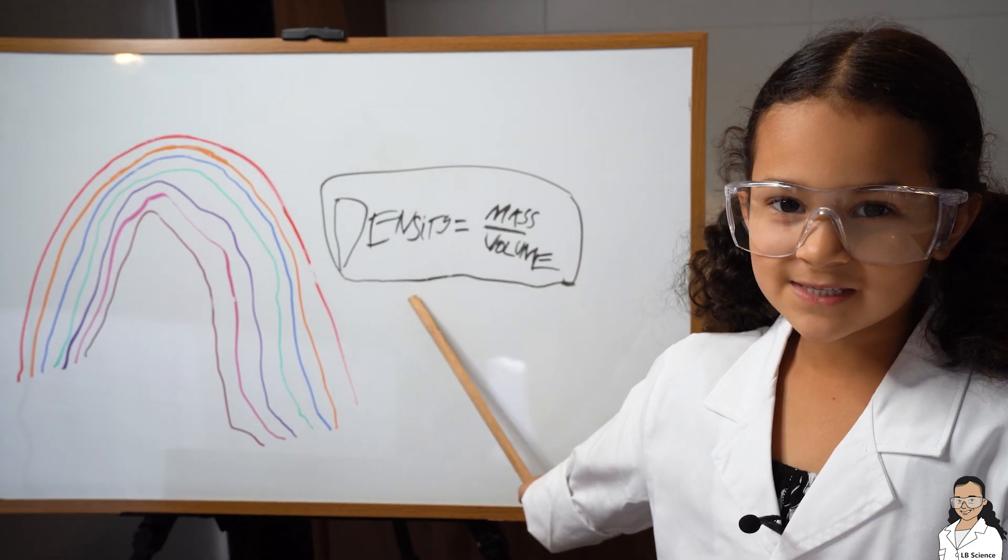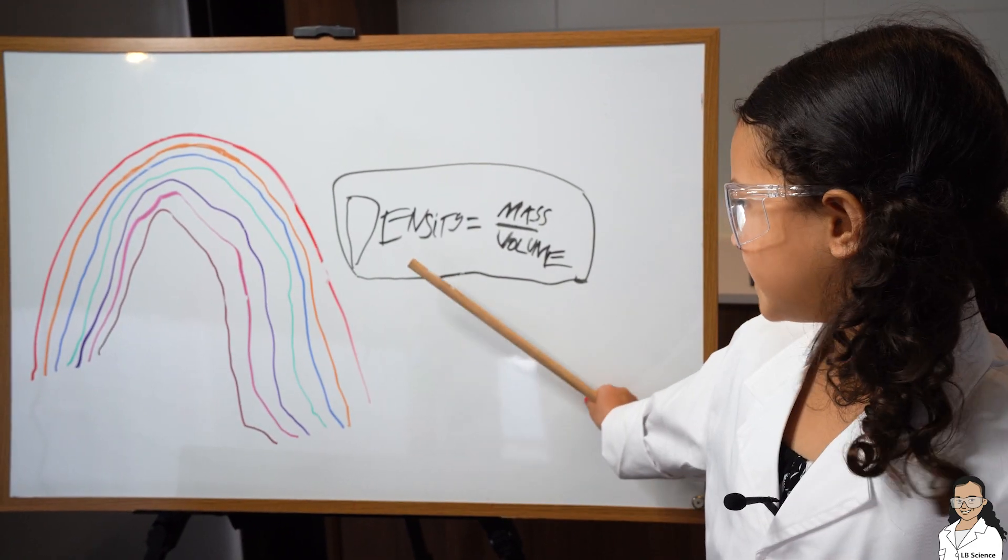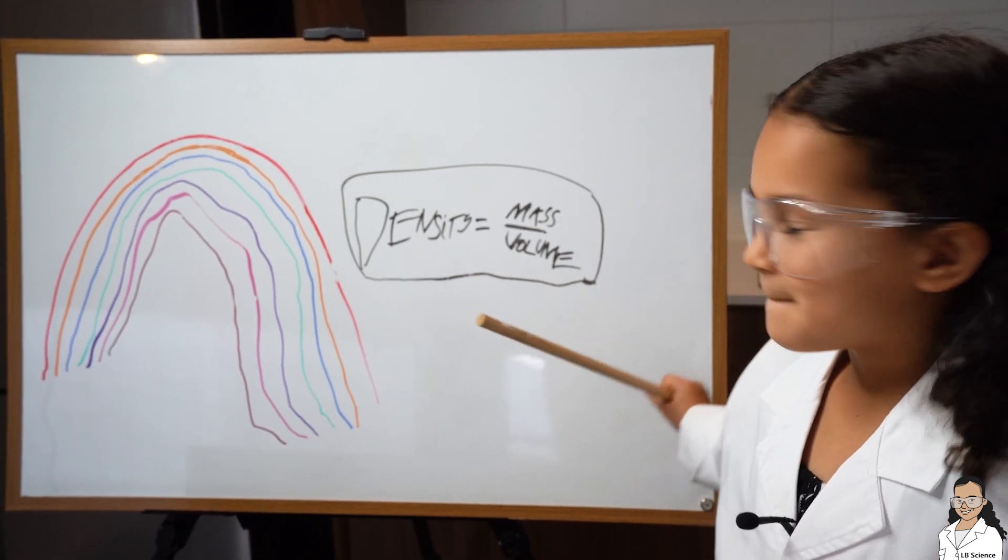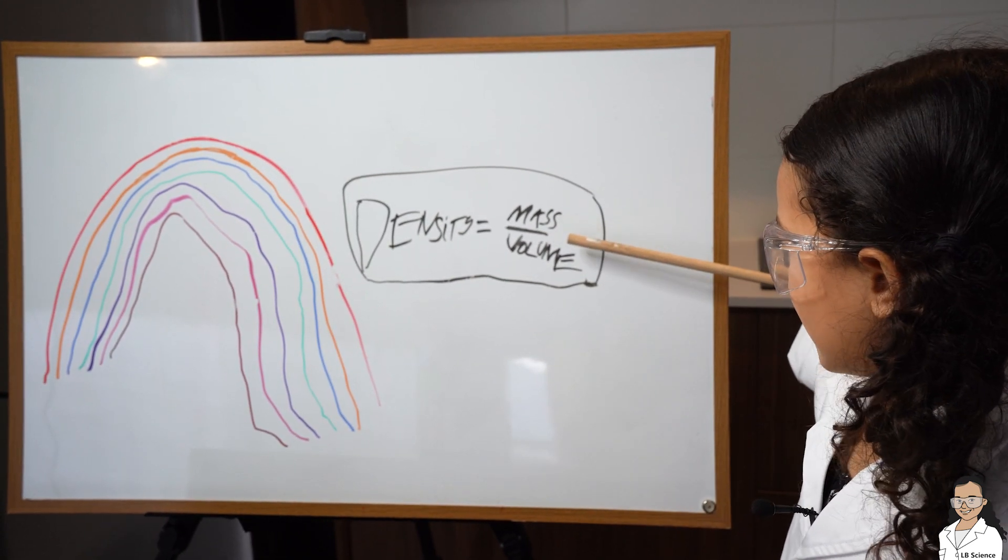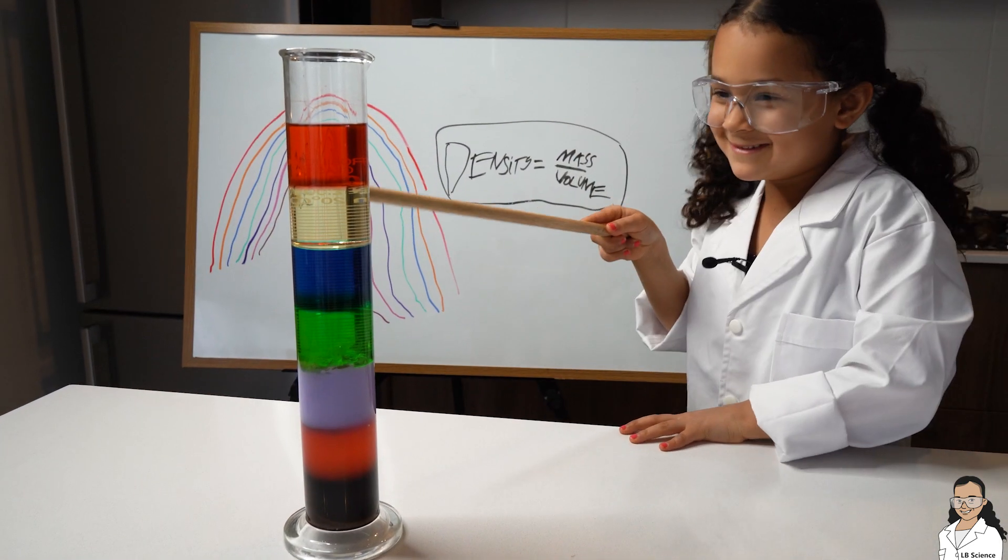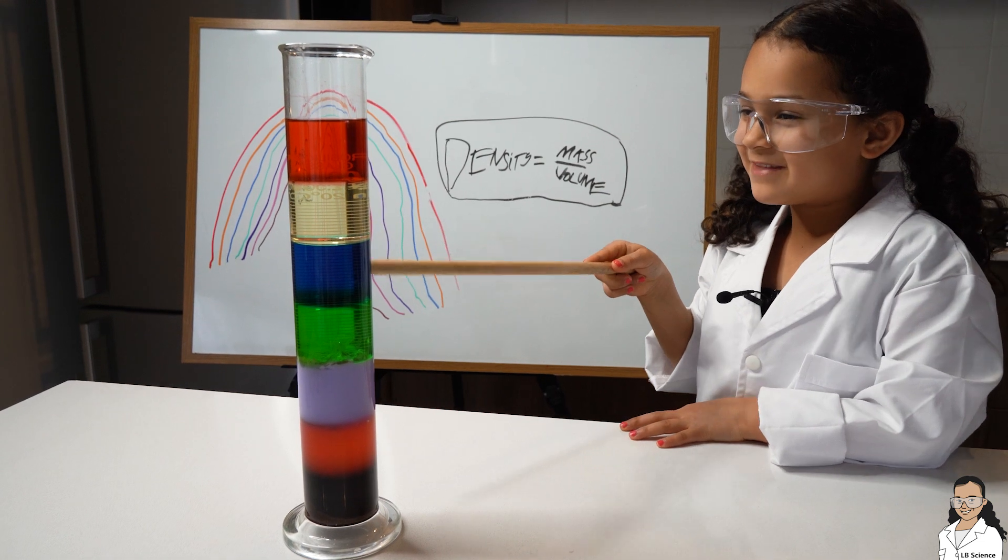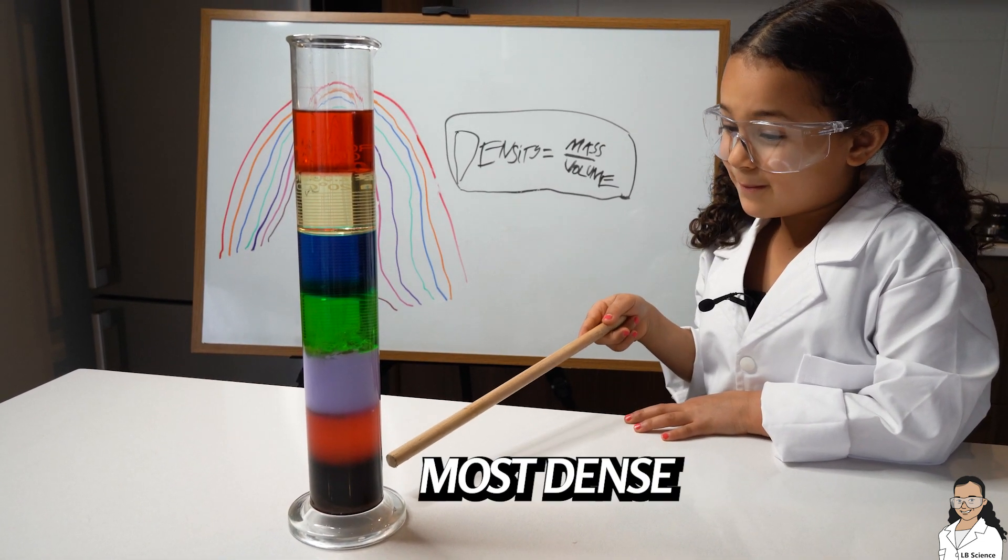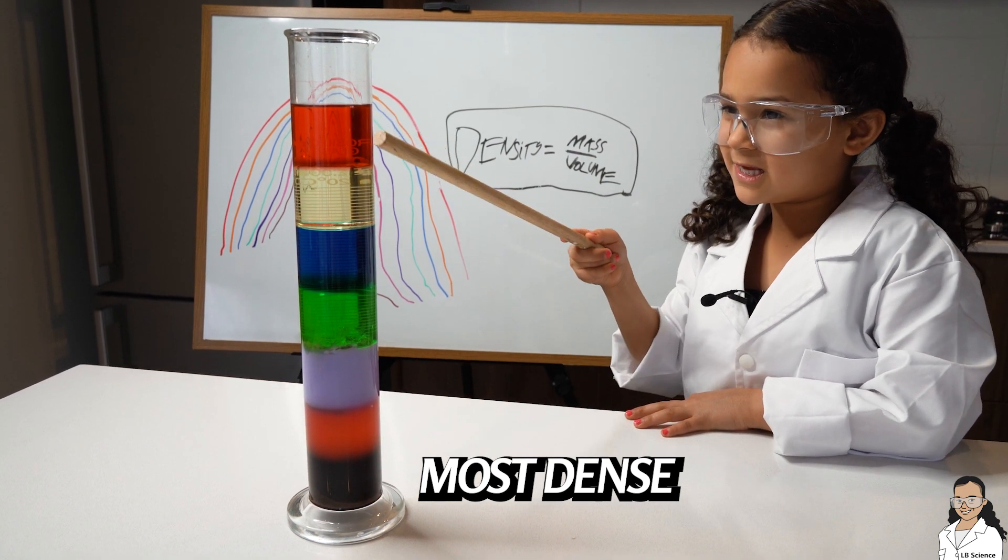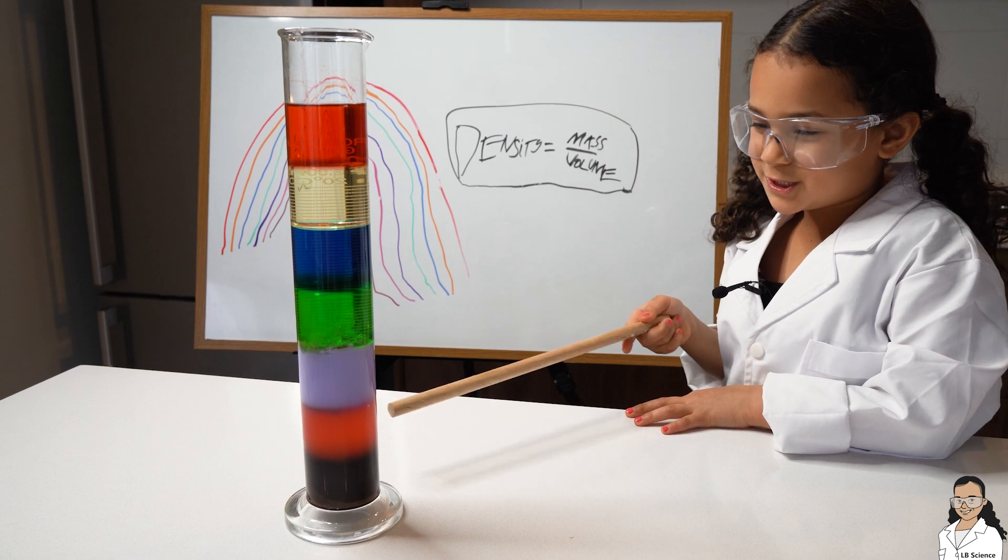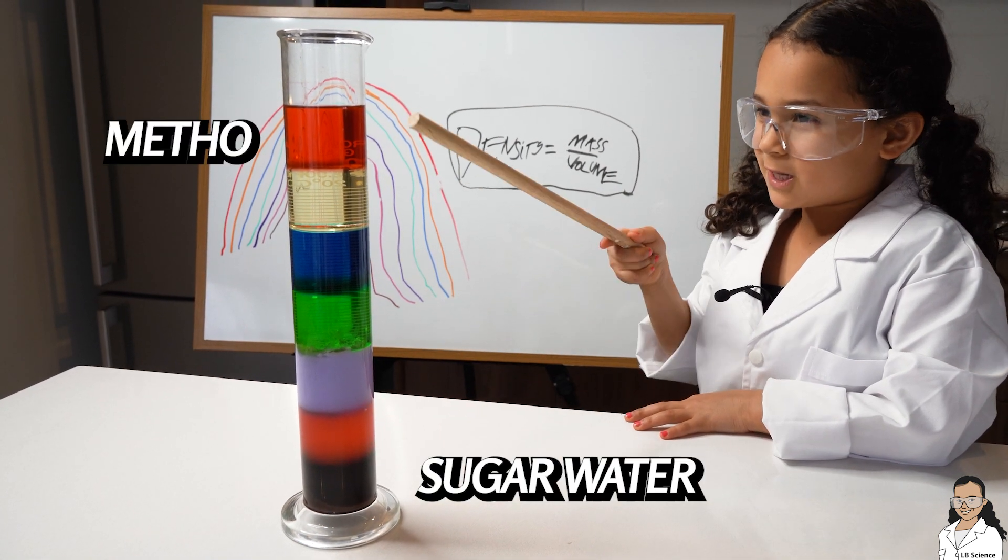So guys, our experiment was all about density. Do you know what density means? Mass divided by volume. Each one of these have a different density. This one is the most dense and this one is the least dense. Do you remember what they are? This one is sugar water and this one is metho.